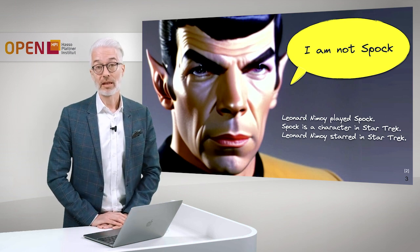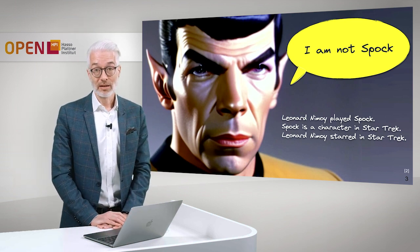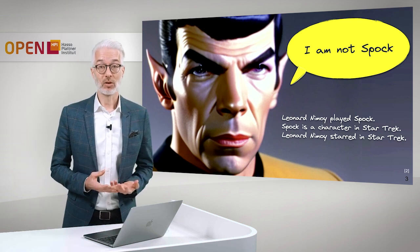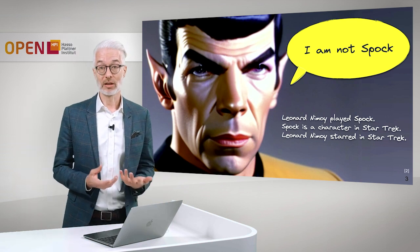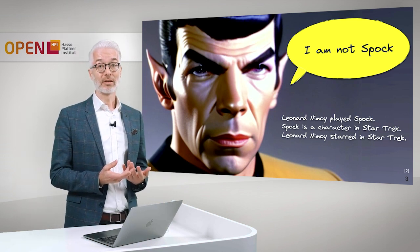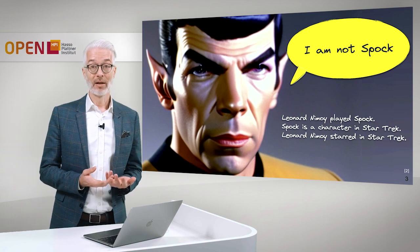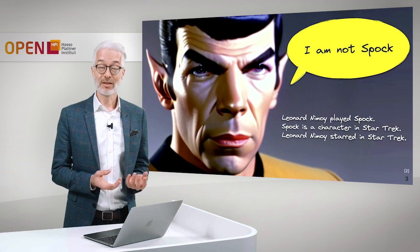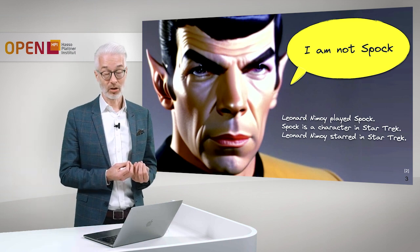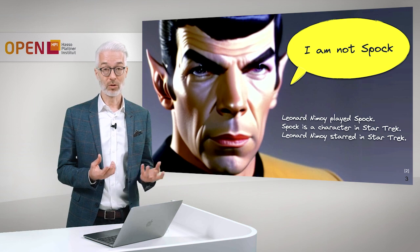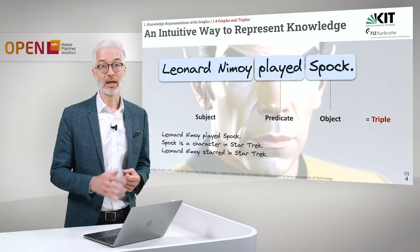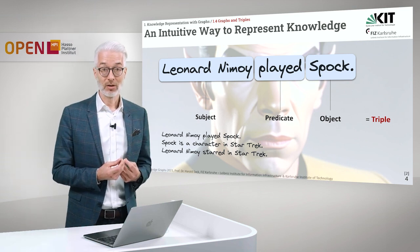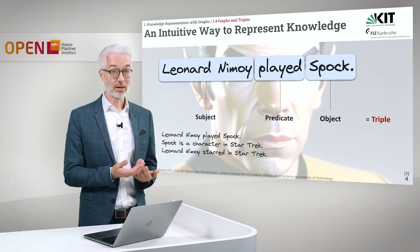Look at the following example. I guess most of you will know that guy called Spock, and you might know Spock is a character from Star Trek, and of course the actor who was playing that fictional character was named Leonard Nimoy. So Leonard Nimoy played Spock, and Leonard Nimoy therefore also starred in Star Trek. These are plain and simple statements of information that we want to represent. In a natural language sentence, you usually have subject, predicate, and object.